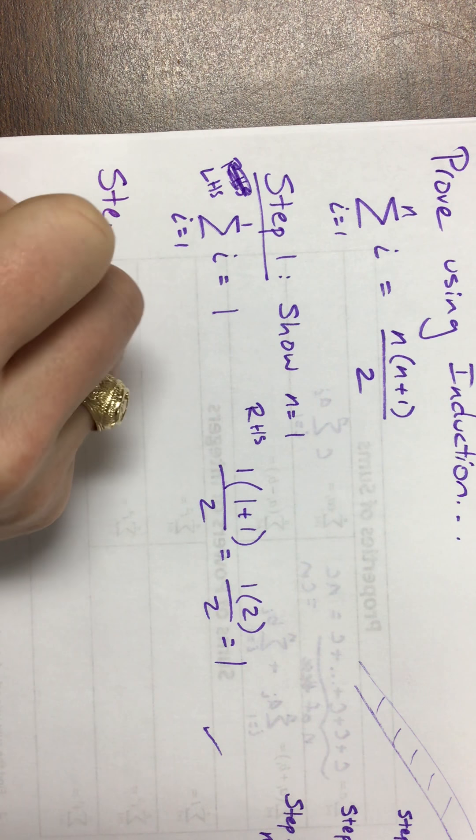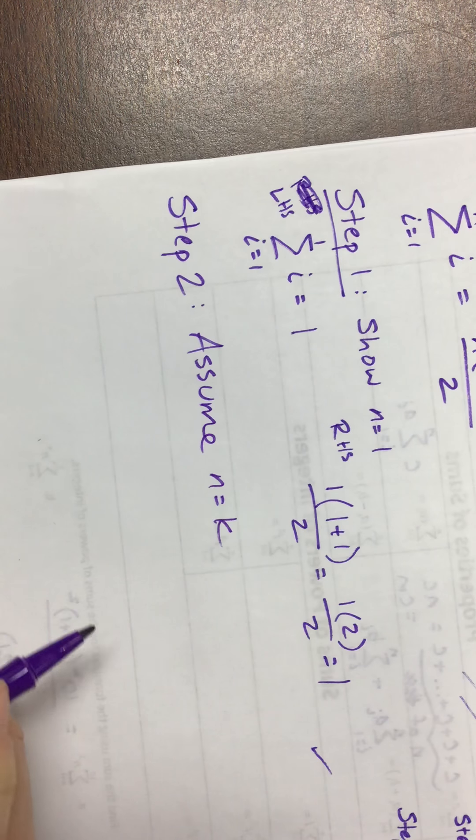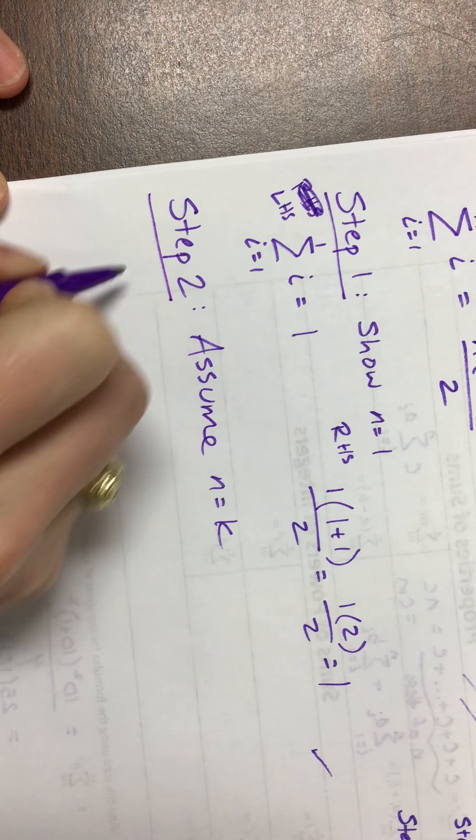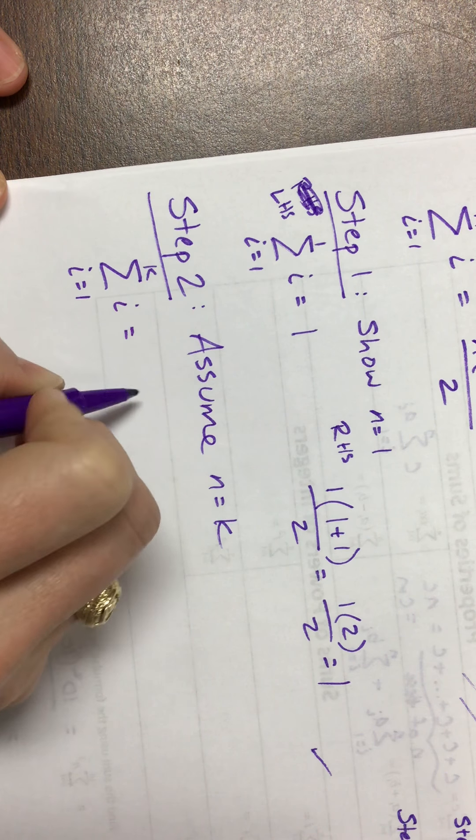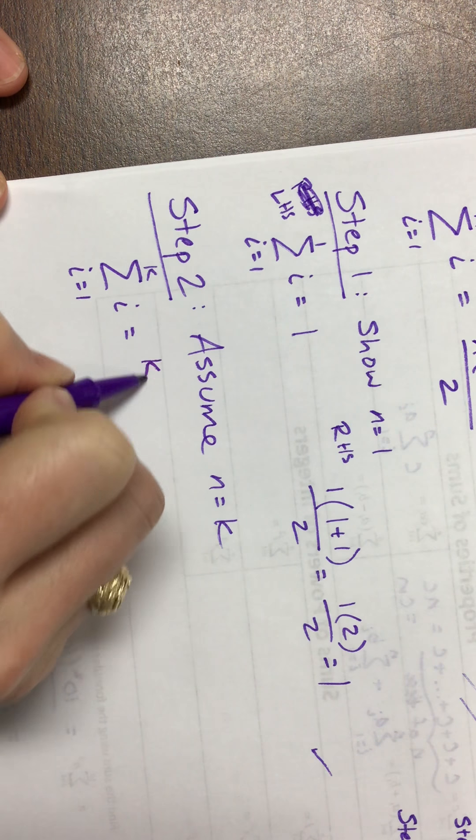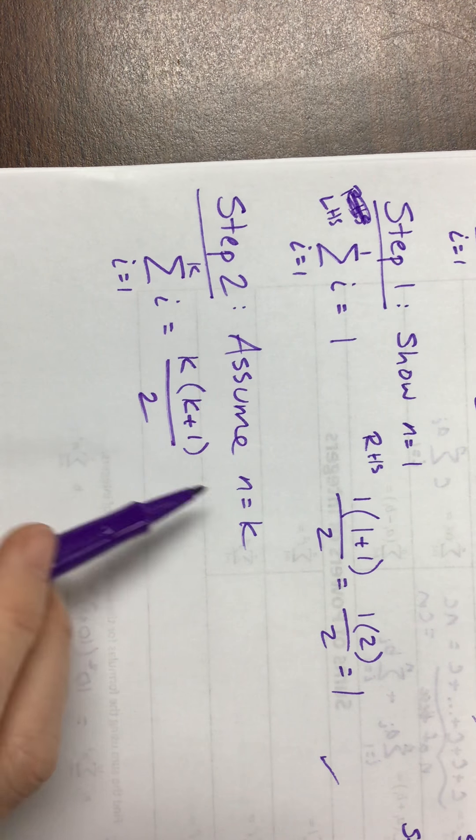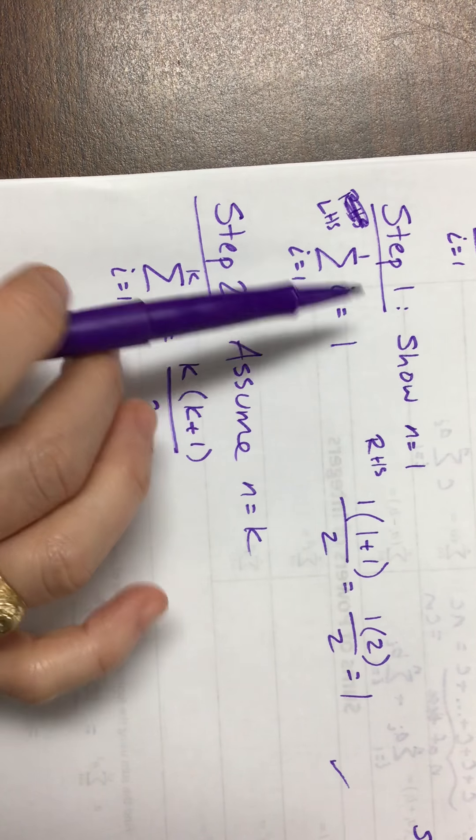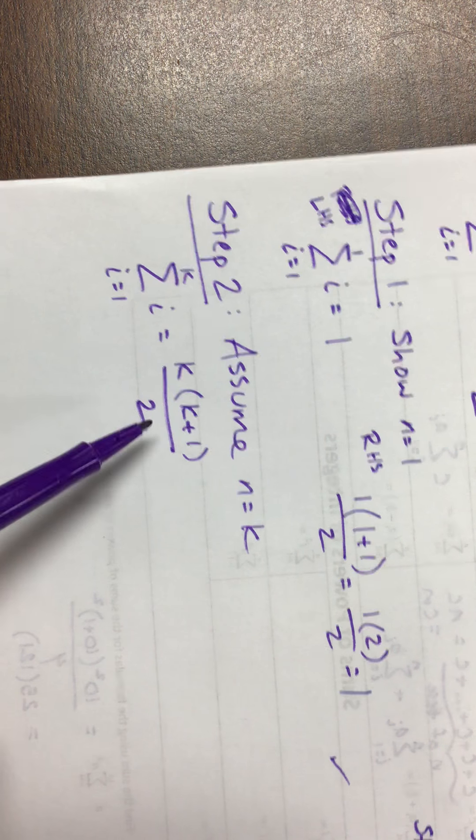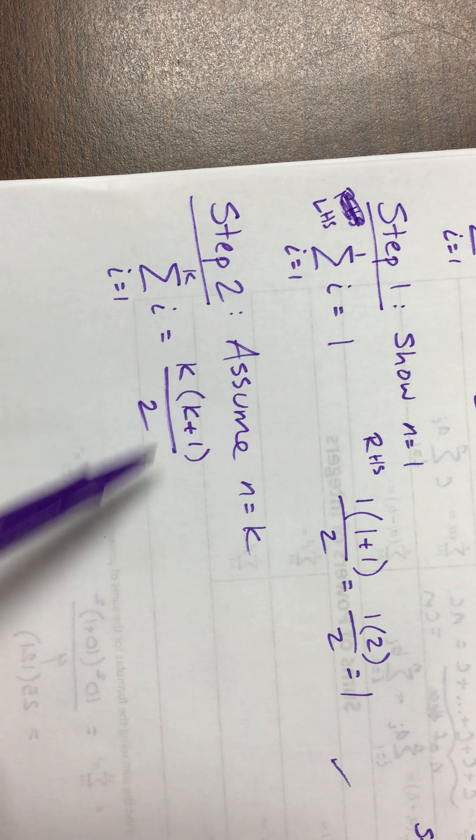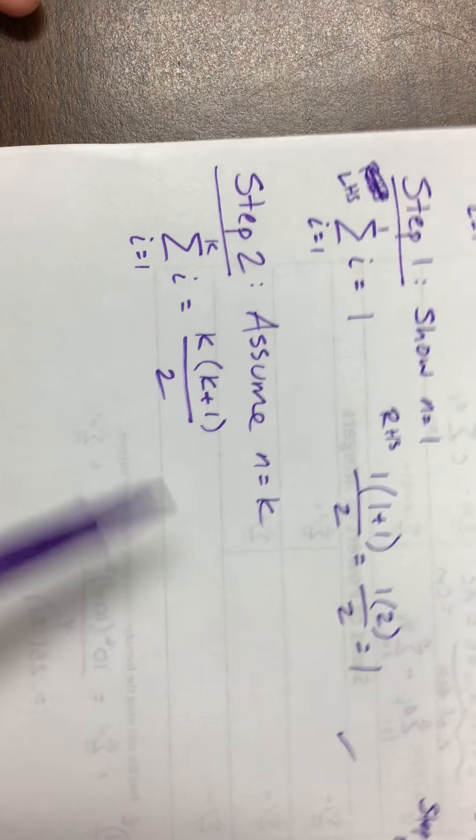Okay, step two is to assume n equals k. So there's step two. So we're going to say the sum as i goes from 1 to k of i is equal to k times k plus 1 over 2. And so this step, these first two, well sometimes step one can be a little scary or a little messy. All of a sudden you have to do a weirder show if this one wasn't too bad. Step two should be pretty straightforward. All you're doing is plugging in k for wherever we had n. So notice anywhere I had n, and we're done.